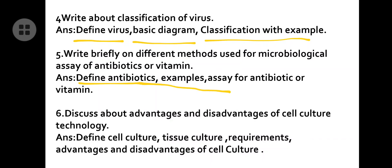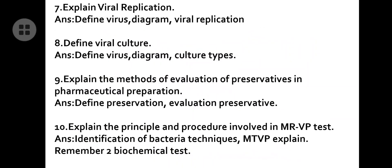Fifth question: write briefly on different methods used for the microbiological assay of antibiotics, vitamin B12, or cyanocobalamin. Define antibiotics, explain with examples, then go for the assay. They may ask about antibiotics or vitamin B12 or cyanocobalamin — both assays are similar. Sometimes they give a specific microbe name like Streptococcus. Sixth question: discuss the advantages and disadvantages of cell culture technology — define tissue culture, write requirements, and list advantages and disadvantages. Seventh: viral replication — draw a diagram of one virus and write the viral replication chart.